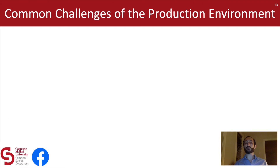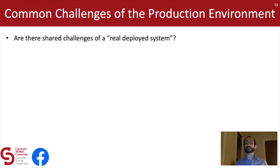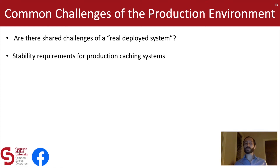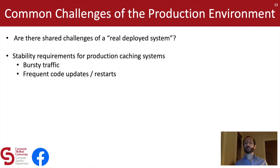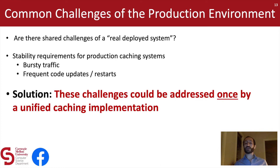The final category of challenges is really a set of challenges related to being a deployed system in a production environment, and most of these are related to cache stability. Caches need to be able to handle bursty traffic due to diurnal patterns or load balancing events. Similarly, caches need to handle frequent code updates and system restarts — it's common for caches at Facebook to restart once every two weeks for a code update, and most caches would dump their contents and require a lengthy warm-up to achieve acceptable hit ratios. So we need to provide ways to mitigate these production stability effects. Our solution is to try to address these challenges once using a unified cache implementation.